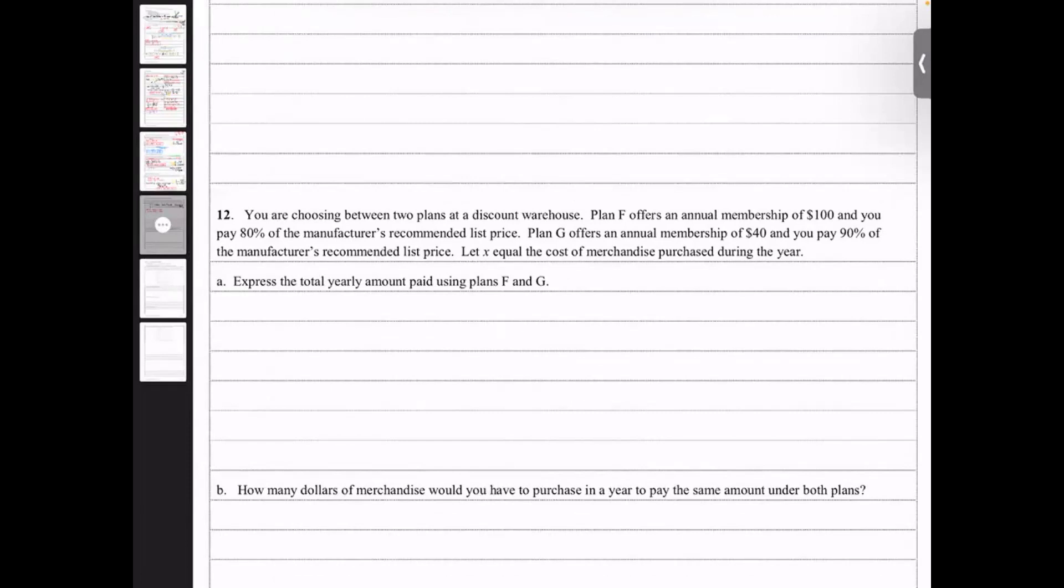Plan G offers the annual membership of $40, but you pay 90% of whatever the price they got. Let's X equal the cost of the merchandise during that year. We want to express the total year amount paid using the plans F and the plan G, F and G that's your function.